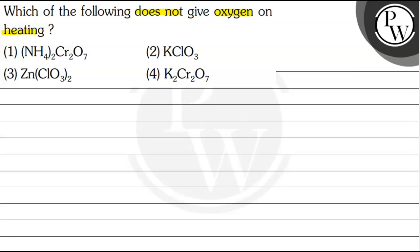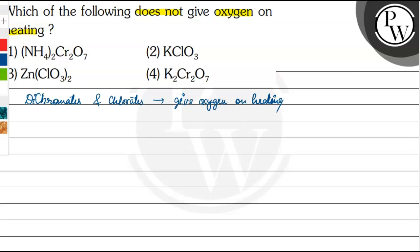Chromates, dichromates, and chlorates generally give oxygen on heating. So chlorates and dichromates both give oxygen on heating. However, there is one exception — the ammonium dichromate.